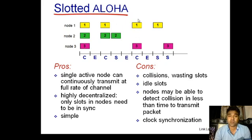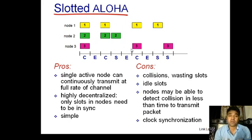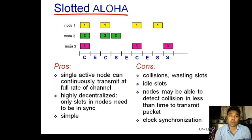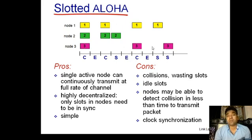Again there is an empty slot, then a collision where both frames overlap. Then Node A gets success in one time slot, and Node 3 gets success in another. That is how Slotted ALOHA works — whenever a node has a frame to send, it sends it at the starting of the time slot. Now, what is the benefit of dividing the time axis into slots and how does Slotted ALOHA improve efficiency?